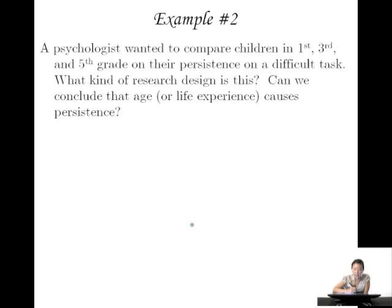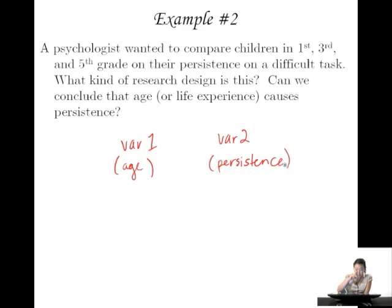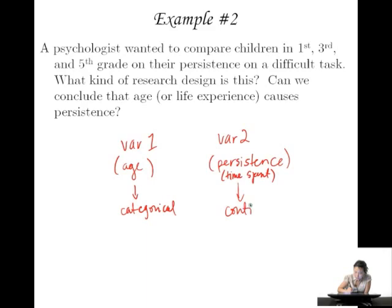Example two: a psychologist wanted to compare children in the first, third, and fifth grade on their persistence on a difficult task. What kind of research design is this? They want to know about two variables. Variable one is age or grade level — that's a categorical variable. Variable two is persistence, which they might measure as time spent on a difficult task, like a really hard puzzle. That would be a continuous variable. So we know that we're in category three.